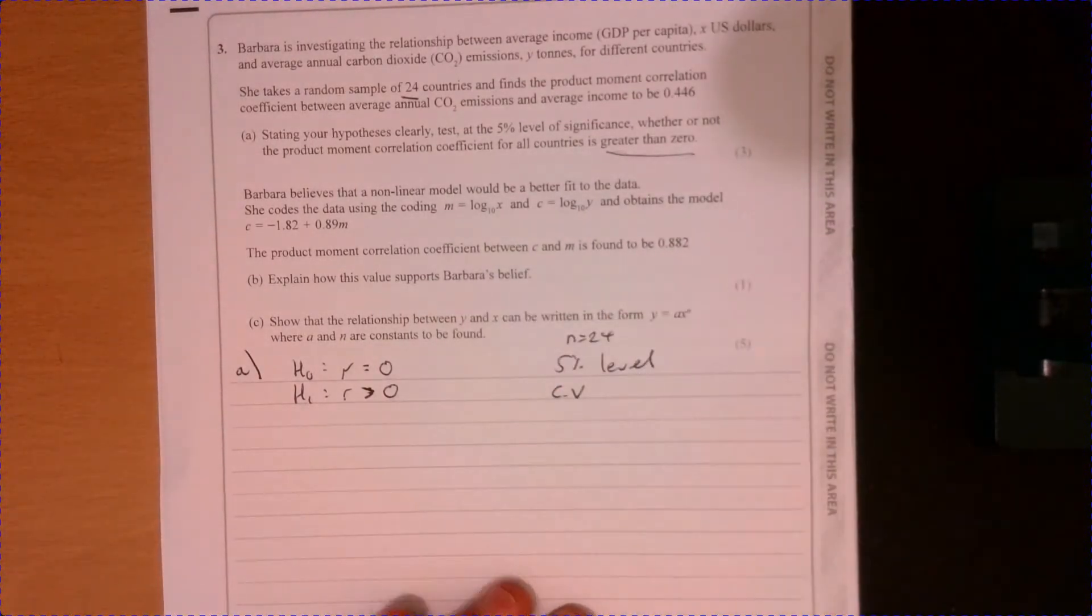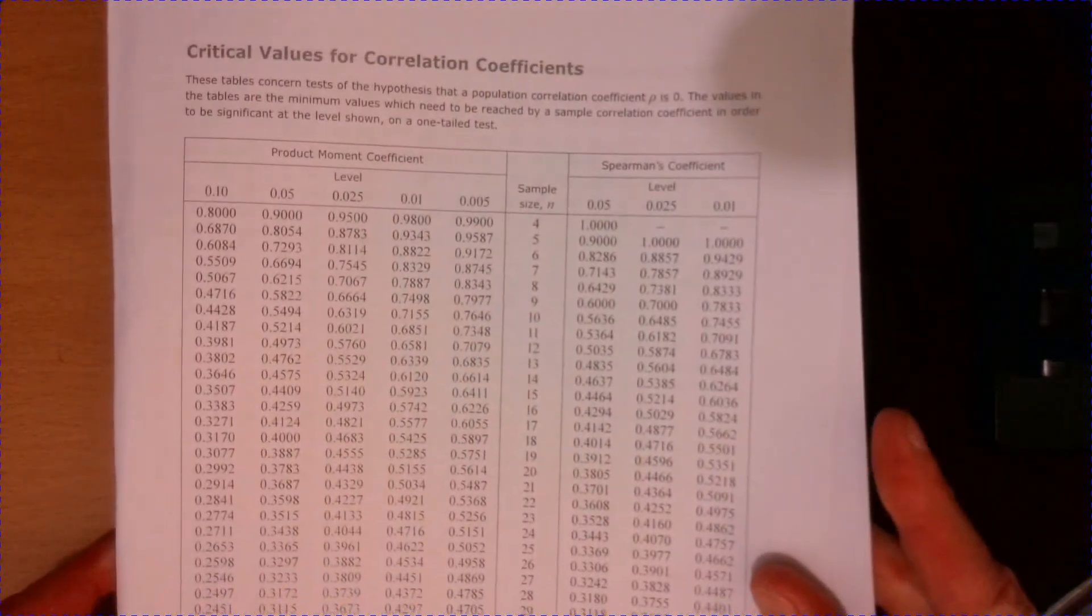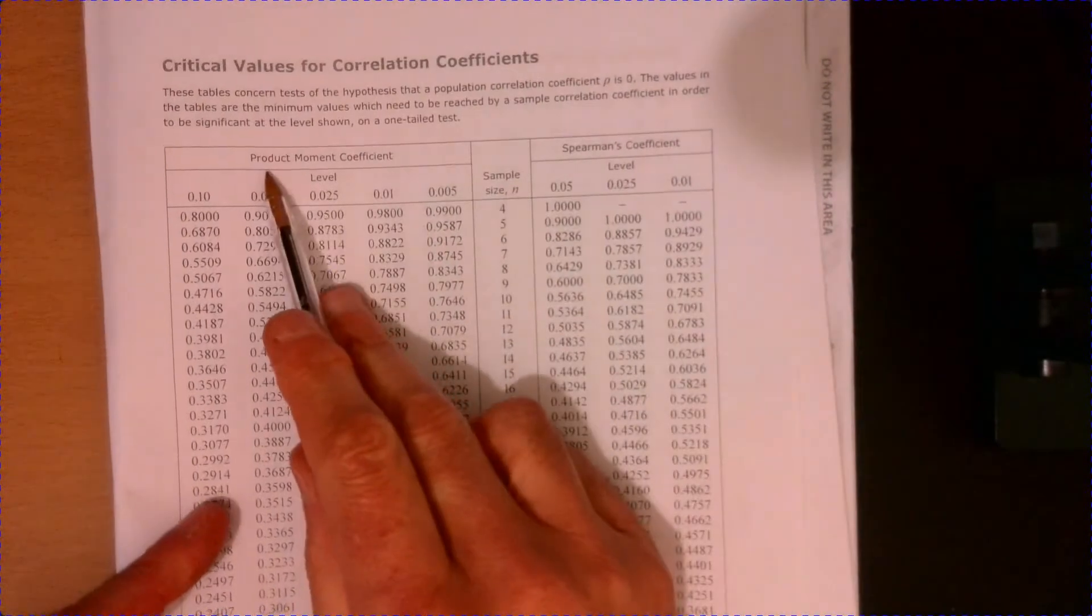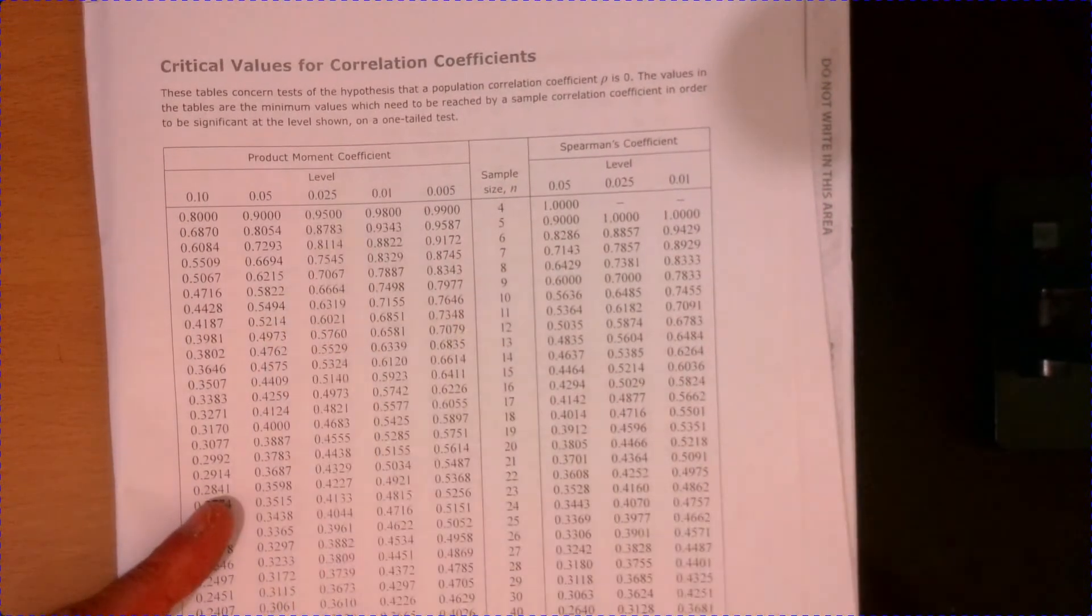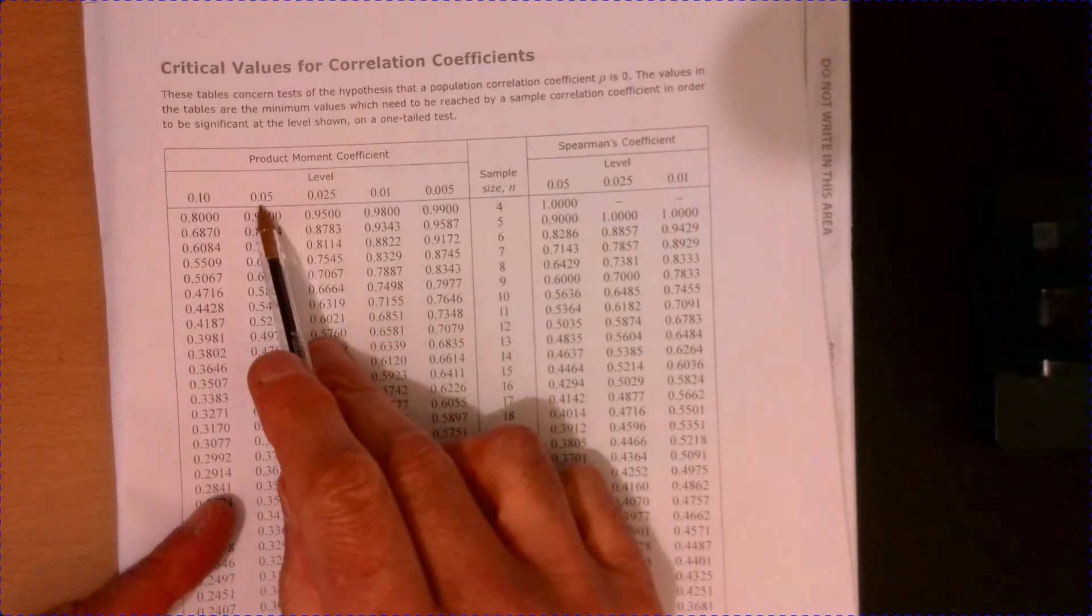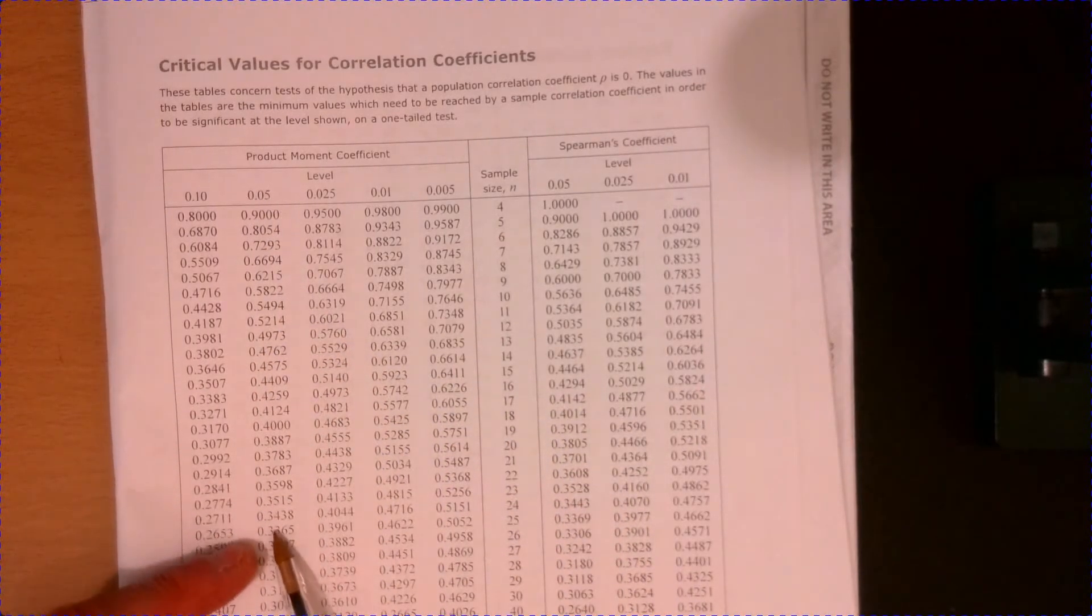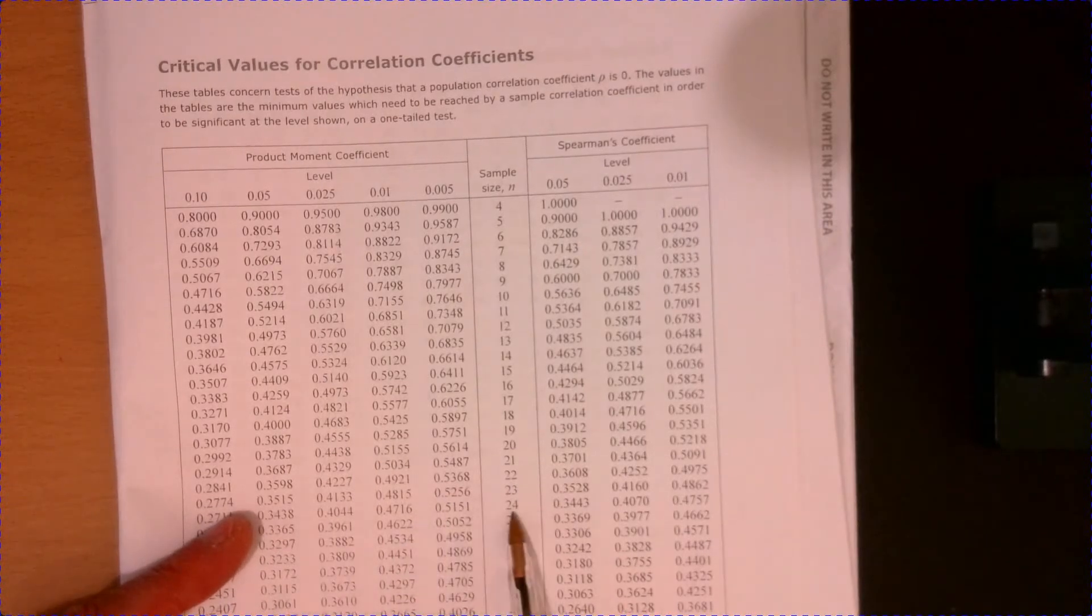So this is where you need to use your tables. So you've got some tables just here. So we're looking at the product moment correlation coefficient and we're looking at 0.05. And we're coming down and here we go. N is 24.